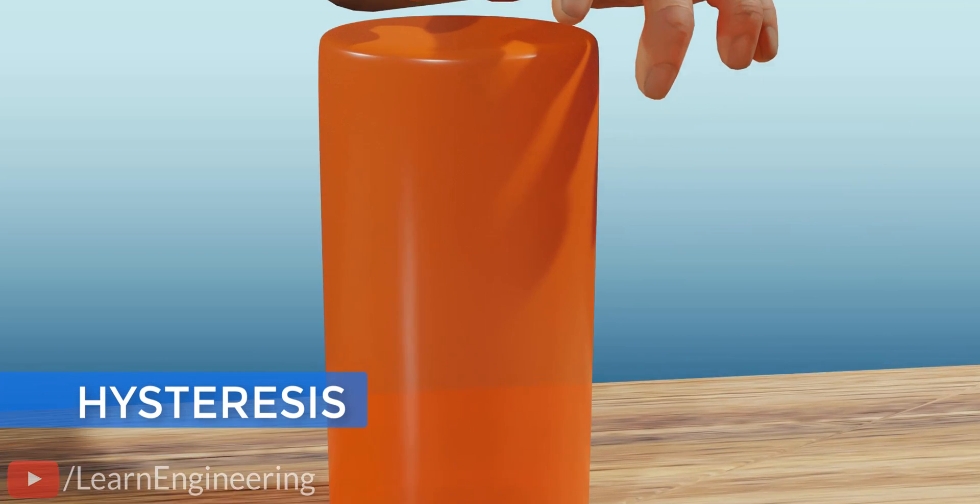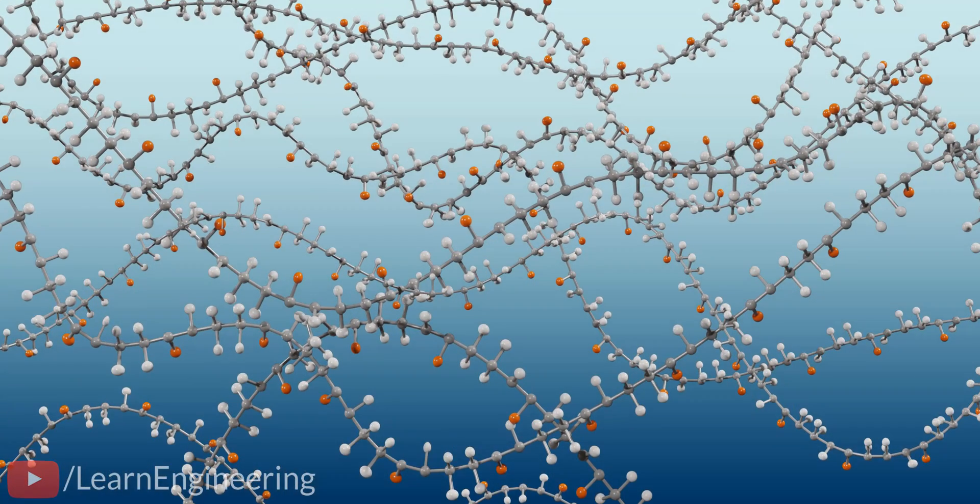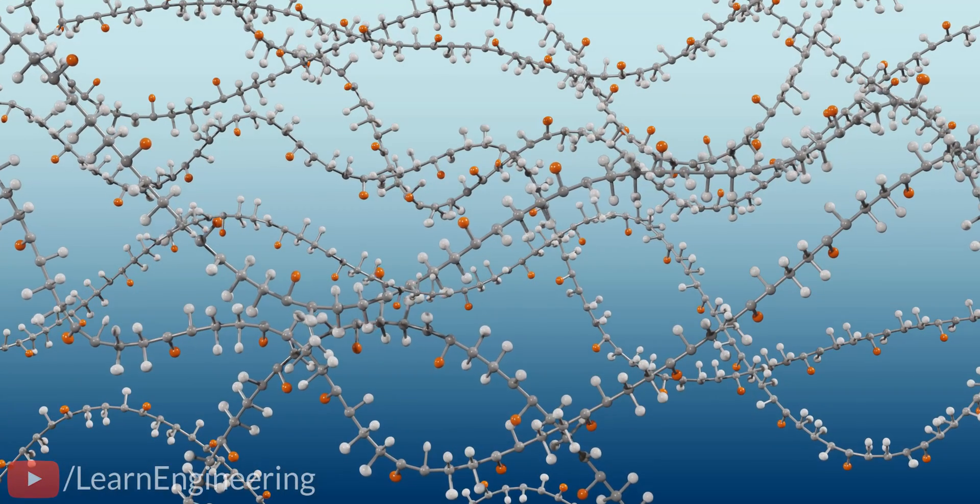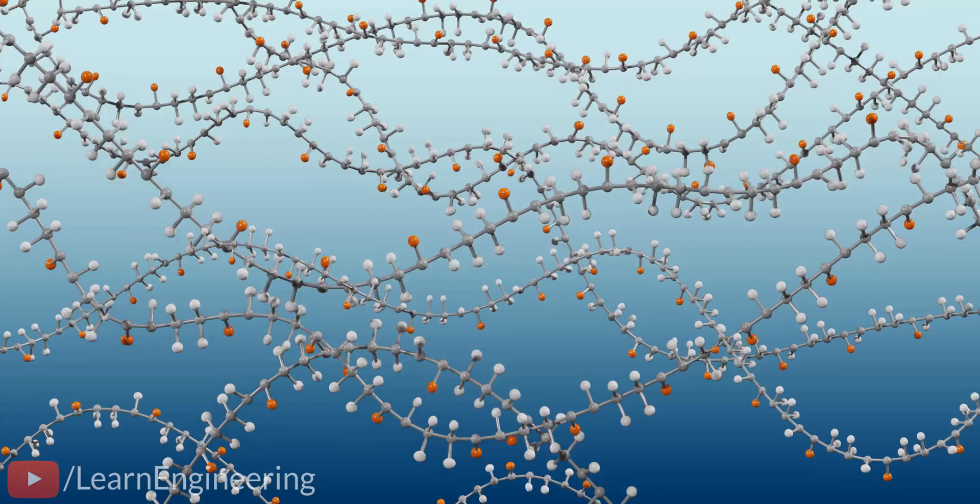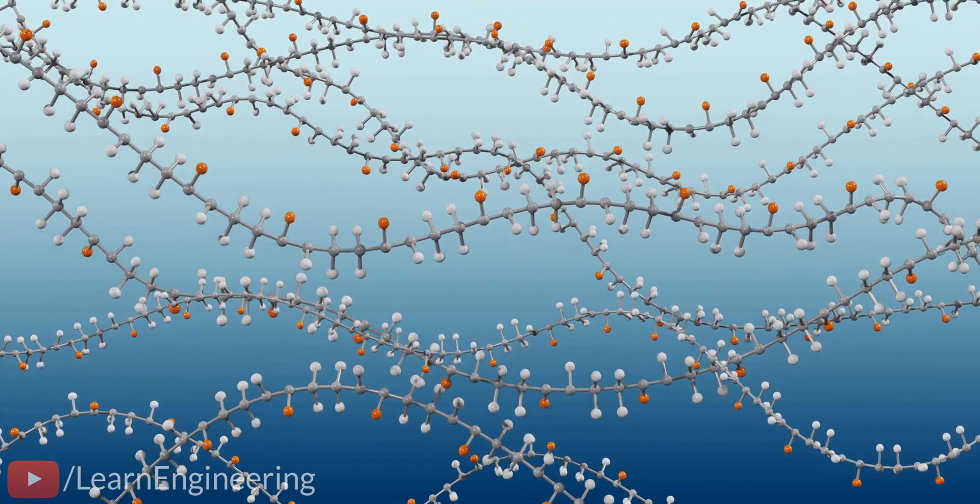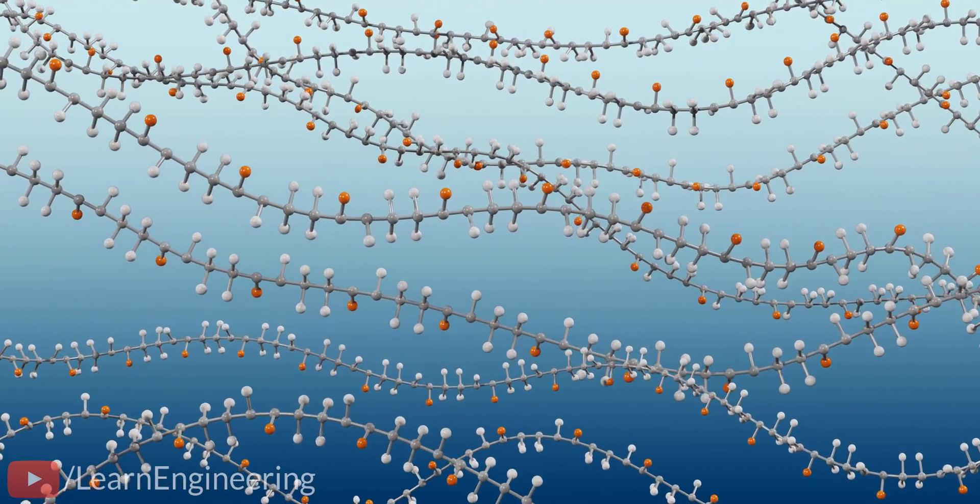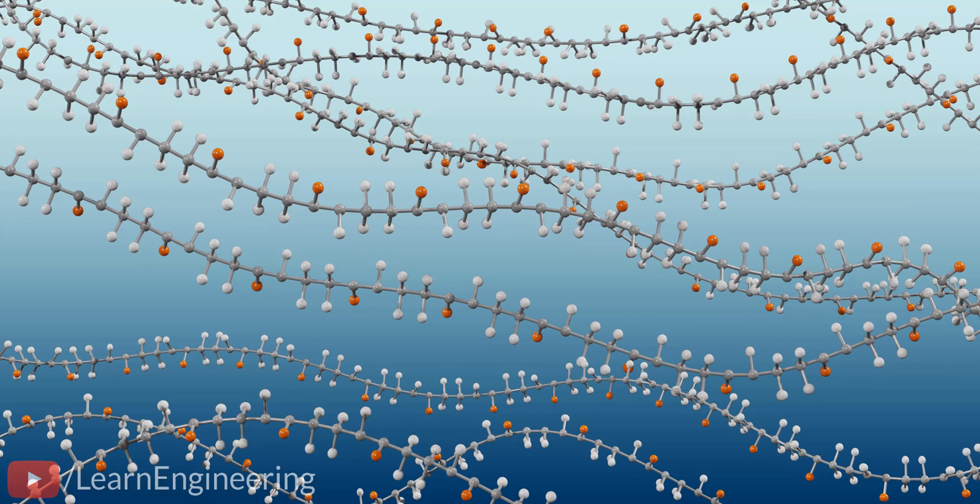Rubber is not a perfectly elastic material. The long, tangled polymers of the rubber have a viscous effect as well. The viscous effect leads to energy loss. In short, when the rubber material undergoes a hysteresis cycle, it loses energy.